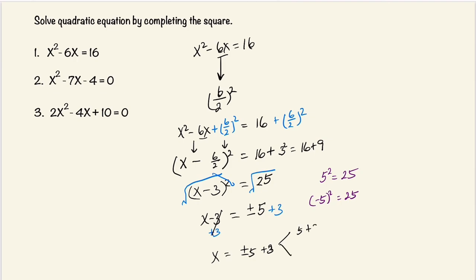5 plus 3 and negative 5 plus 3. That's equal to 8 and that's equal to negative 2. So here we have x is equal to 8 and negative 2. These are our solutions.